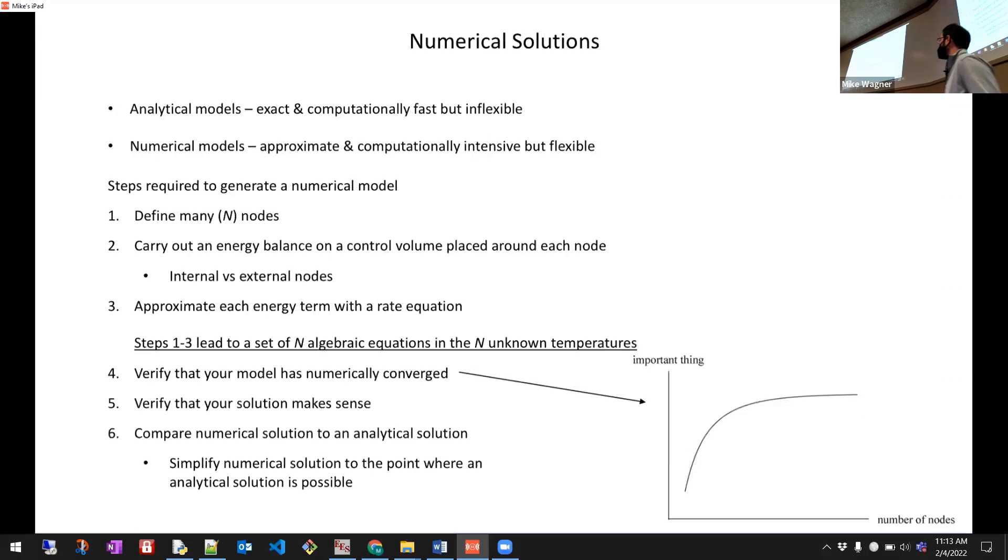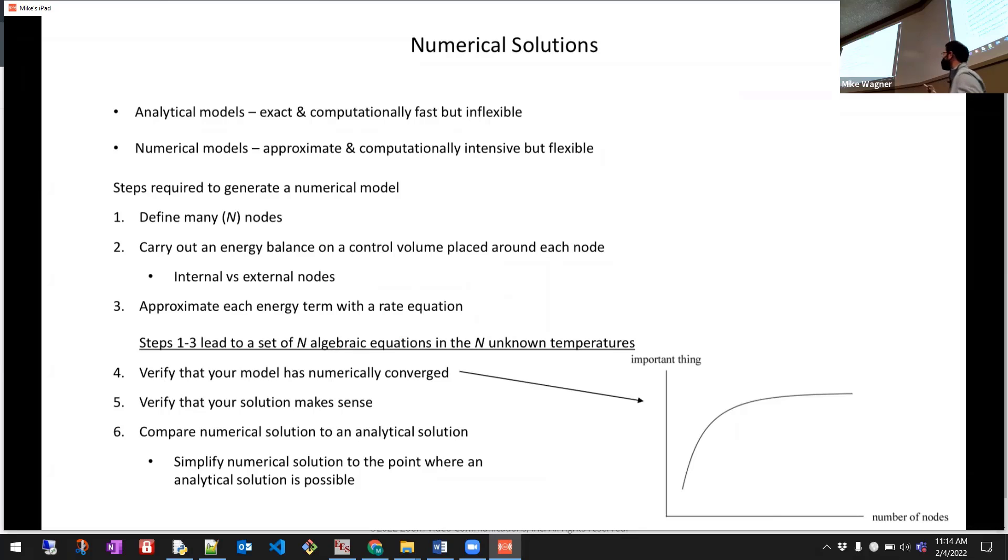You have to finally solve the problem. The last thing you want to do is do things that are going to help you make sure that the problem you're solving actually makes sense. Verify that your solution makes sense. So if you're modeling something and you see that the temperature from node to node is oscillating significantly, and intuitively, there's nothing in the problem that would make it do that, that's a good indication that there's some instability in your model, and your model's giving you garbage. Don't just take it as, this is the answer.